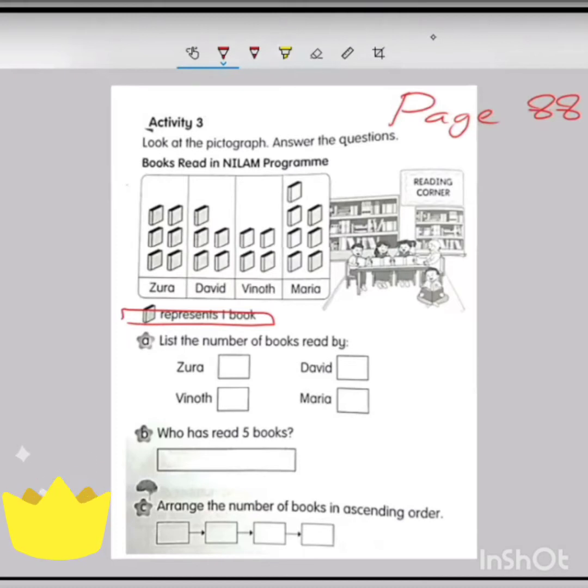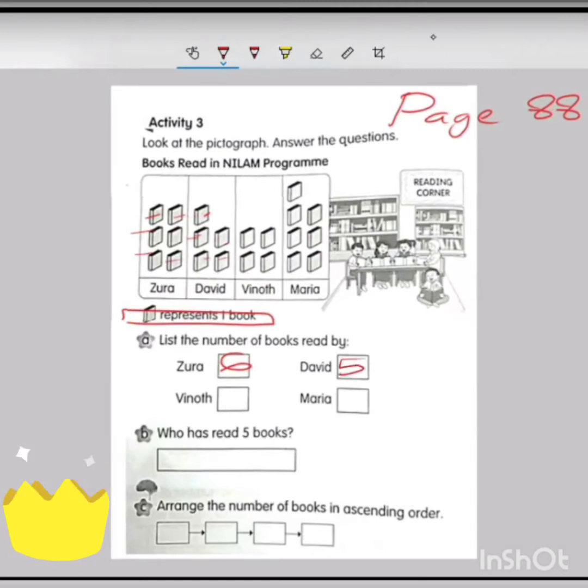Now list the number of books read by Zora. We need to count how many books that she read. One, two, three, four, five, six. So, six. How about David? How many books for David? One, two, three, four, five. So David reads five books.